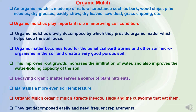Organic mulch improves root growth, increases infiltration of water, and also improves the water holding capacity and water retention capacity of the soil for a longer period. Decaying organic matter also serves as a source of plant nutrients and it will also maintain the soil temperature. However, organic mulch also attracts insects, slugs, and cutworms that eat them, so we have to take precautionary measures from time to time and it should be replaced. Organic matter gets decomposed easily, so there will be a need for frequent replacement of the mulch material.